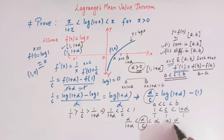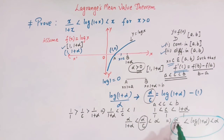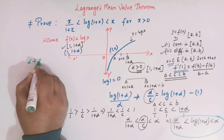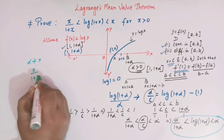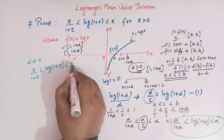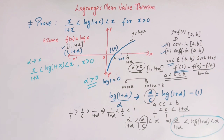So we now have the inequality: alpha/(1+alpha) < log(1+alpha) < alpha. If we replace alpha by x, we get x/(1+x) < log(1+x) < x, and this holds for all x > 0 because alpha > 0. This is how, by the application of Lagrange's mean value theorem, we can prove these types of inequalities.